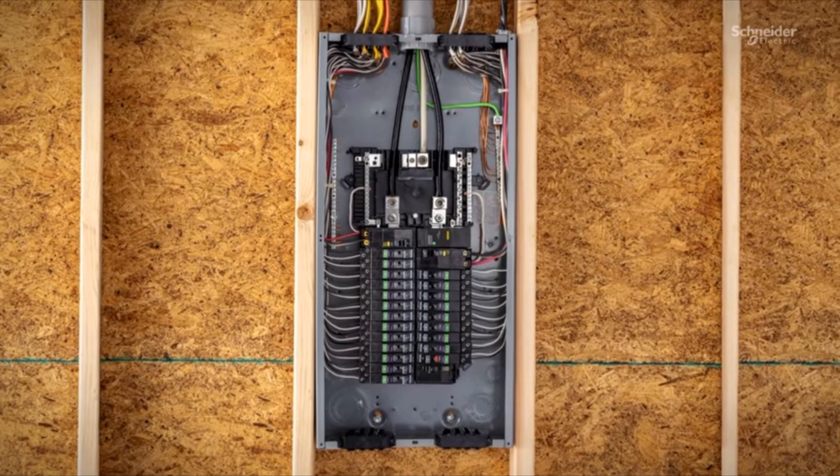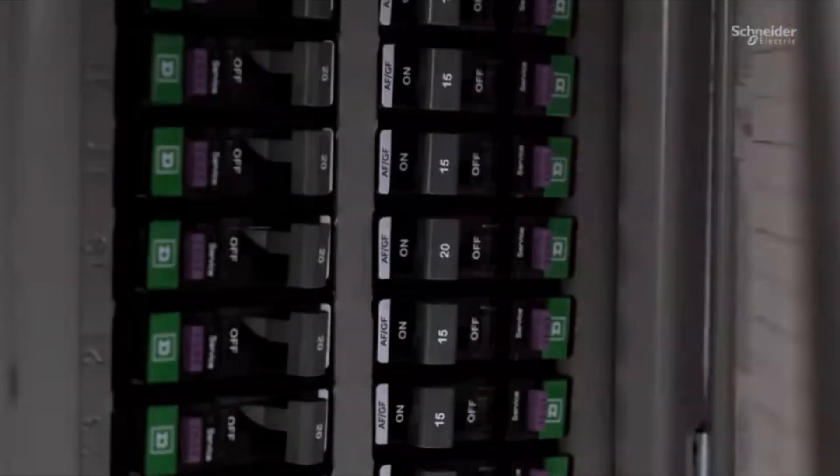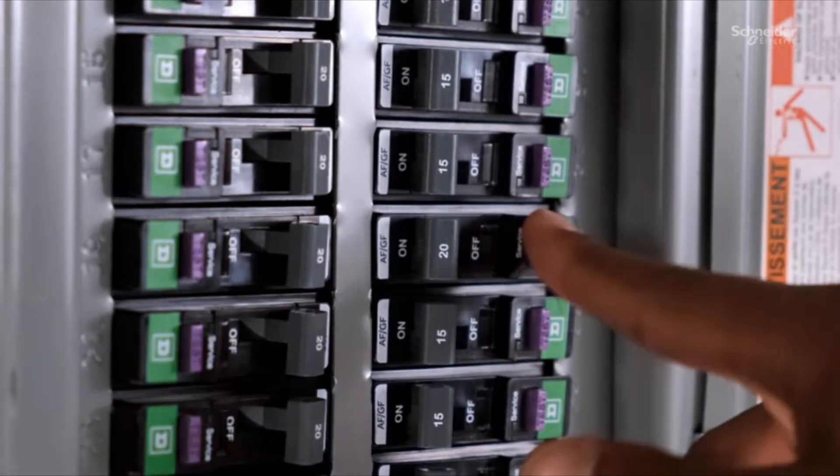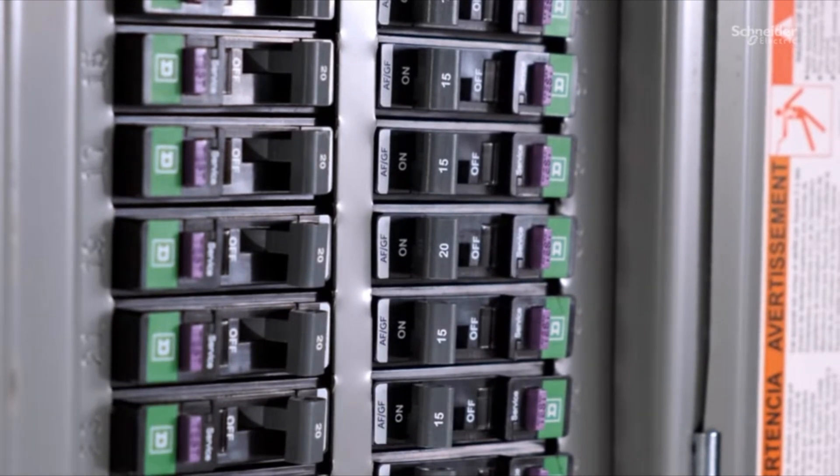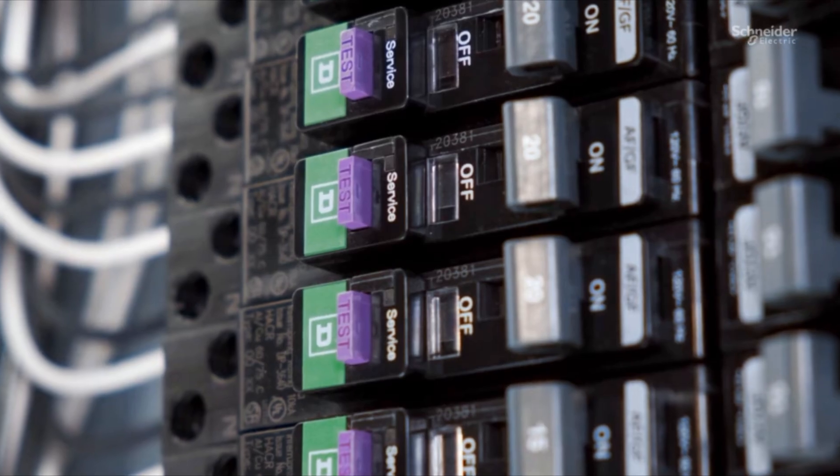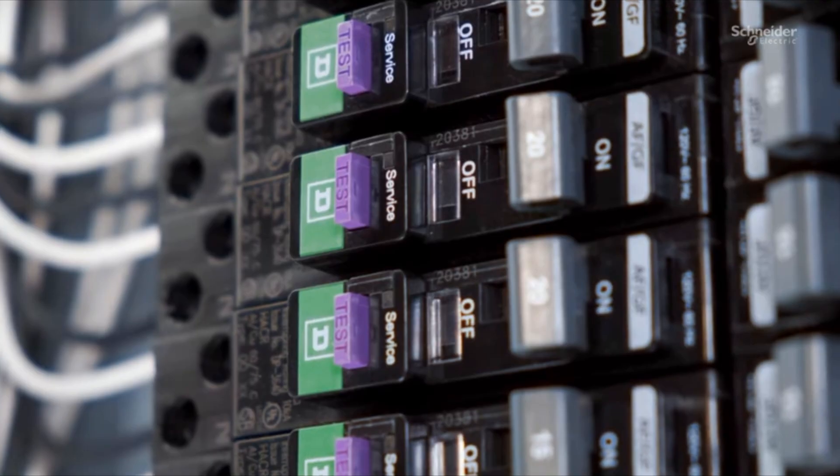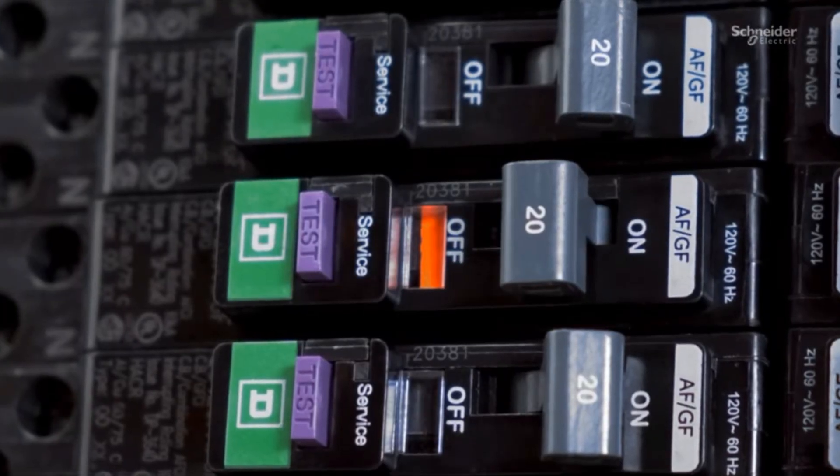One of the standout features of the new arc fault and dual function circuit breakers from Square D is the time-saving diagnostics LED. Whenever a new arc fault or dual function circuit breaker trips, it stores data about the type of fault.